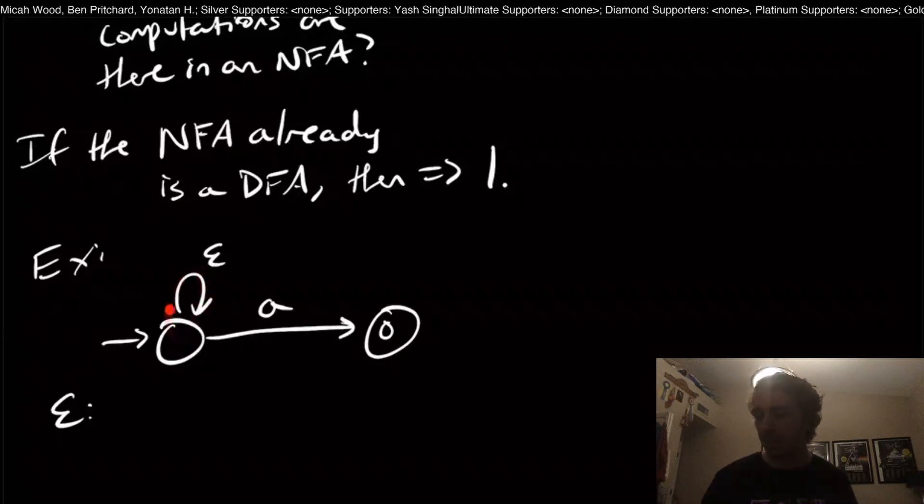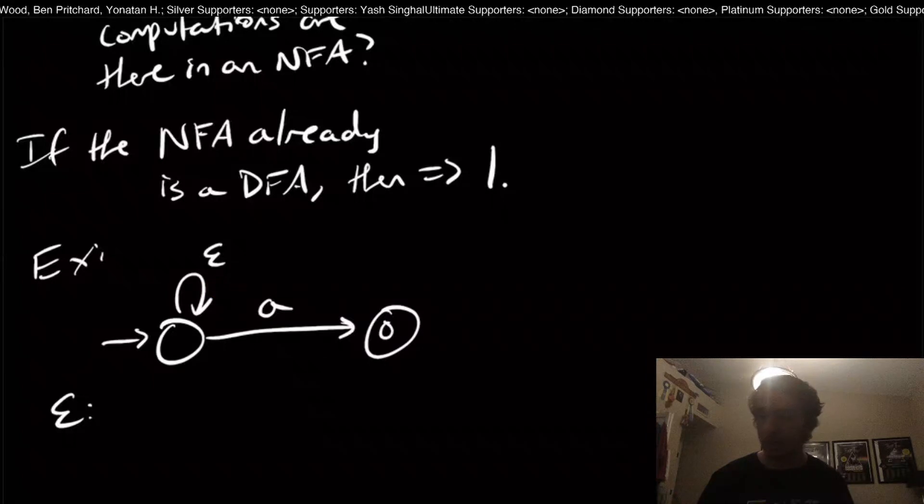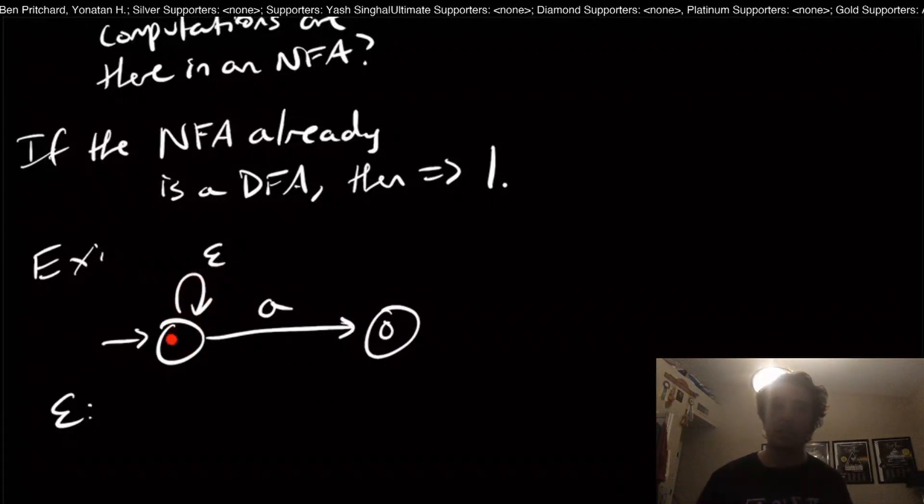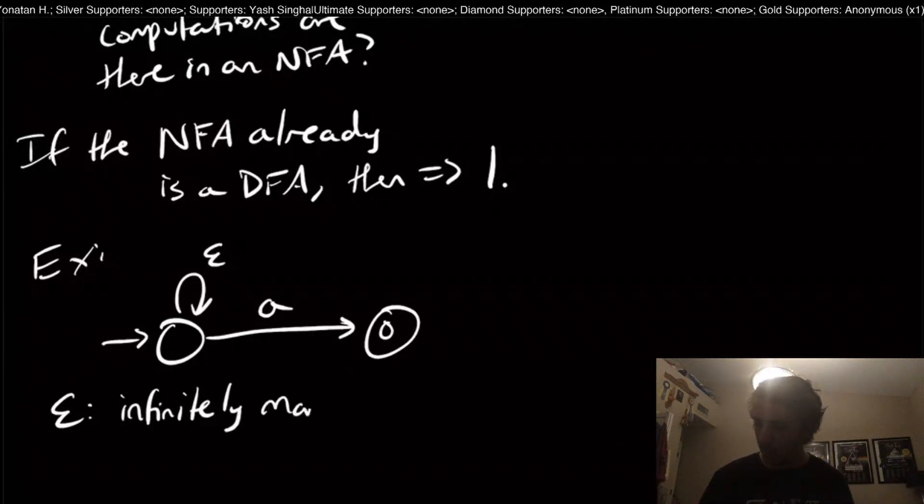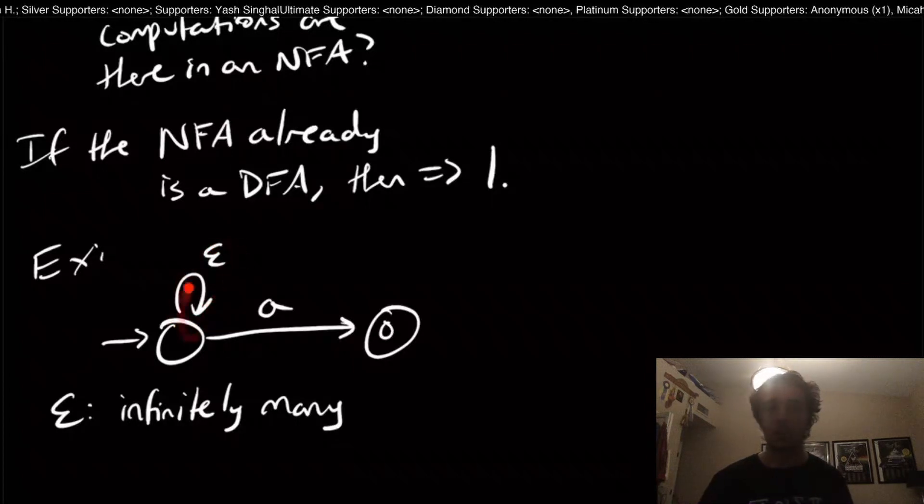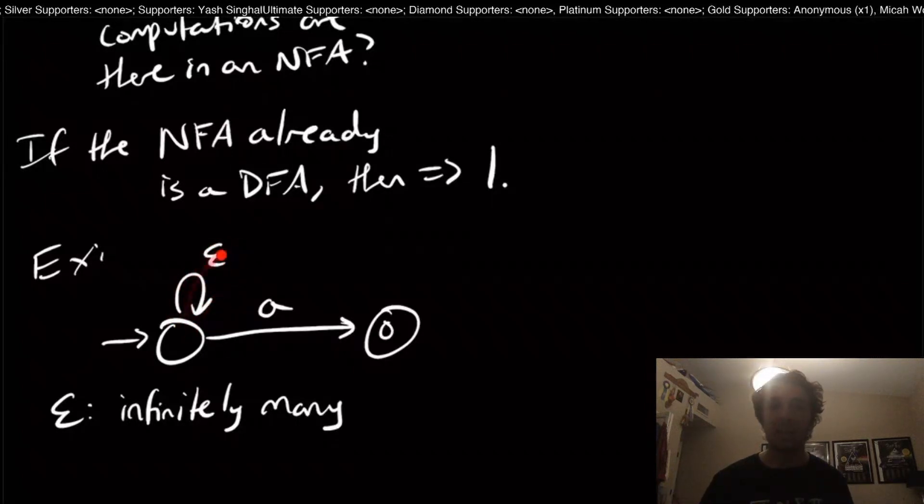But because of this self loop with the empty string, which allows us to not read anything, we can take this self loop as many times as we want. In fact, we have infinitely many possible computations on the string.